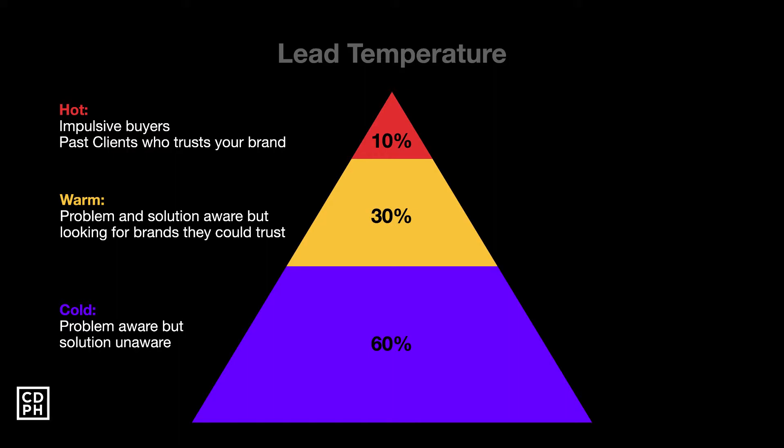The next is yung 30% — yung warm prospects. These prospects are problem and solution aware, but they are looking for brands they could trust. They know that they have problems, they know what solution they would get, pero they are looking for brands that they could trust. And lastly, ito yung pinakamalaki and mostly ignored ng businesses. The way most businesses approach this type of traffic is pinapabili nila ka agad when in reality, hindi ganun. So cold traffic or cold prospects — these are problem aware, but solution unaware.